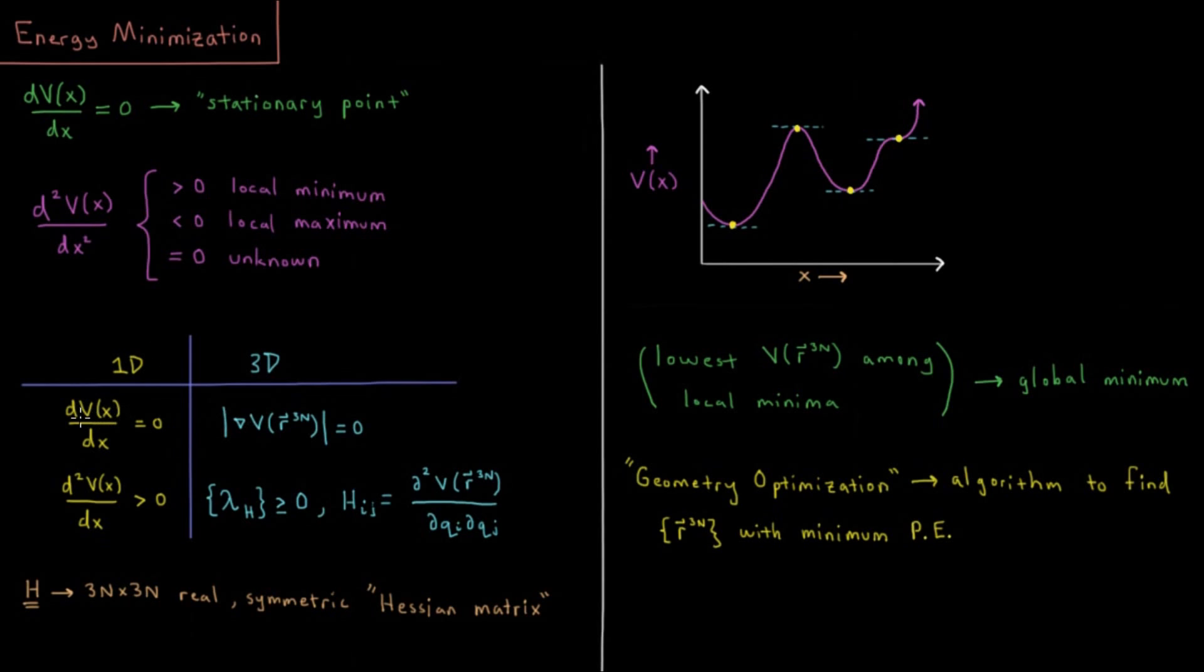So as discussed in that video, the analog of the first derivative of X equaling zero in one dimension would be the magnitude of our gradient vector, the first derivative in all dimensions that's zero in every dimension.